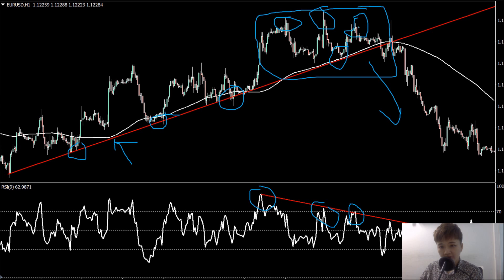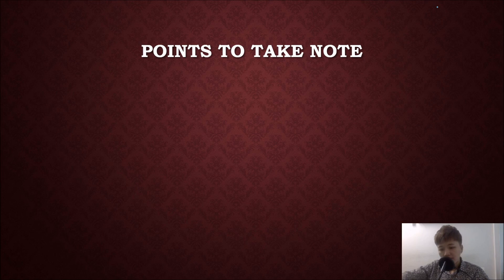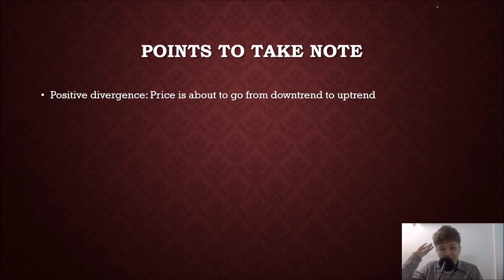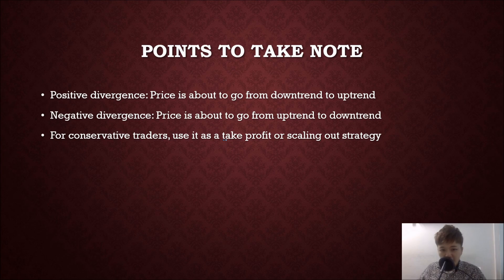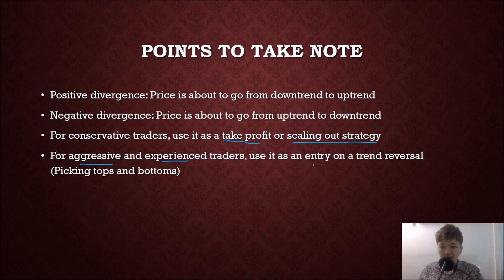Add moving average crossovers and price action confirmation. If you can read chart patterns, this area forms a head and shoulders pattern — left shoulder, head, right shoulder — with a neckline. When price broke the neckline and broke the major trend line, that's additional confirmation the bullish trend is ending. When there's positive divergence, the bearish trend is going to end. When there's negative divergence, the bullish trend is going to end. For conservative traders, use divergence as a take-profit or scale-out strategy; for experienced traders, use it as a trend reversal entry.